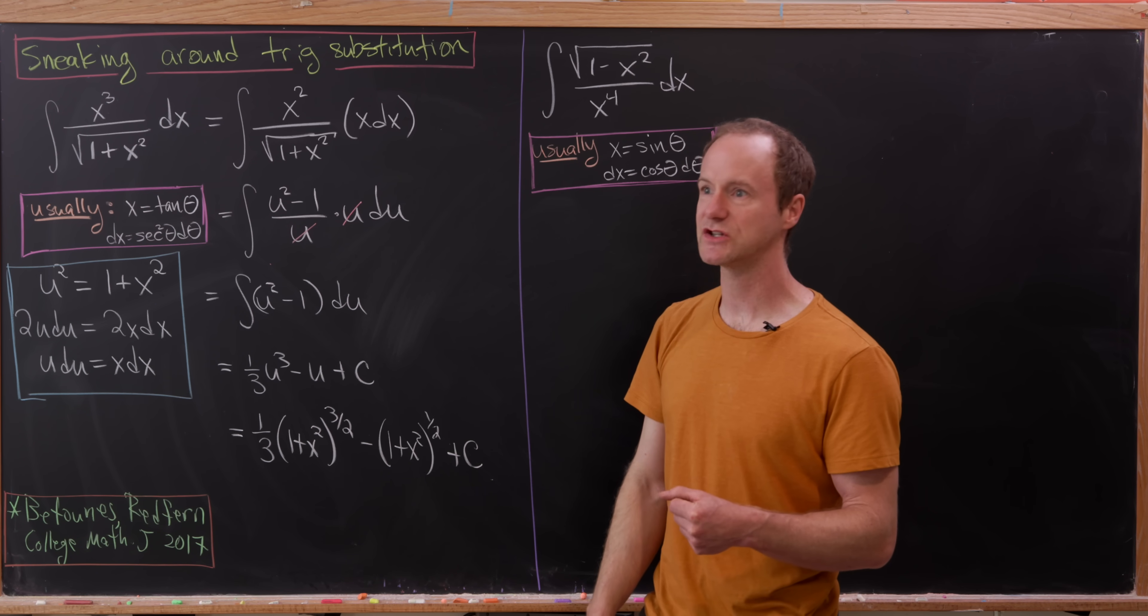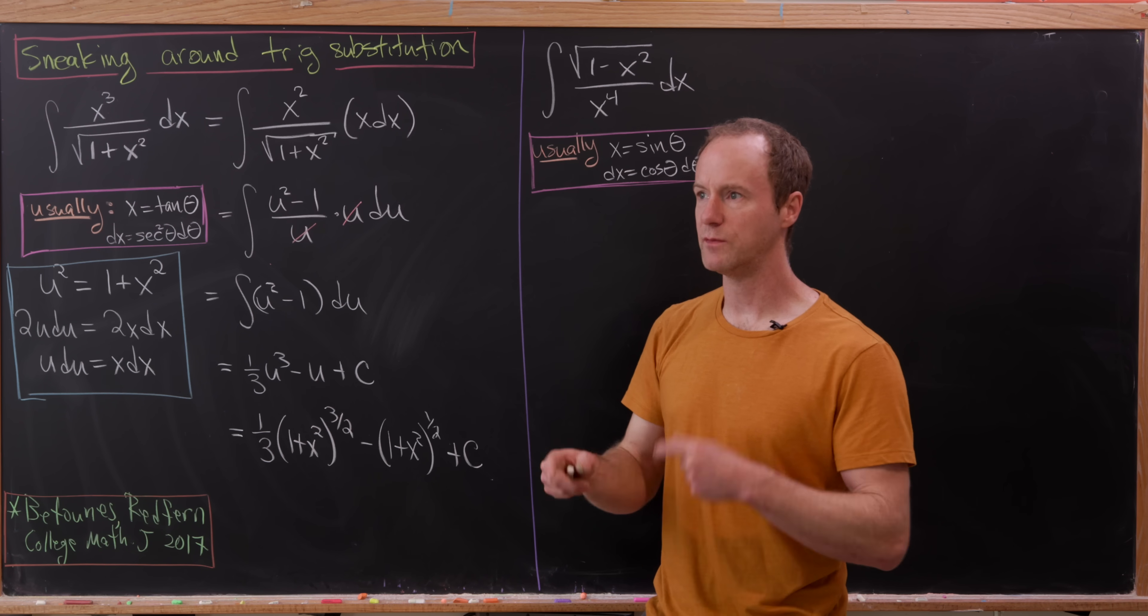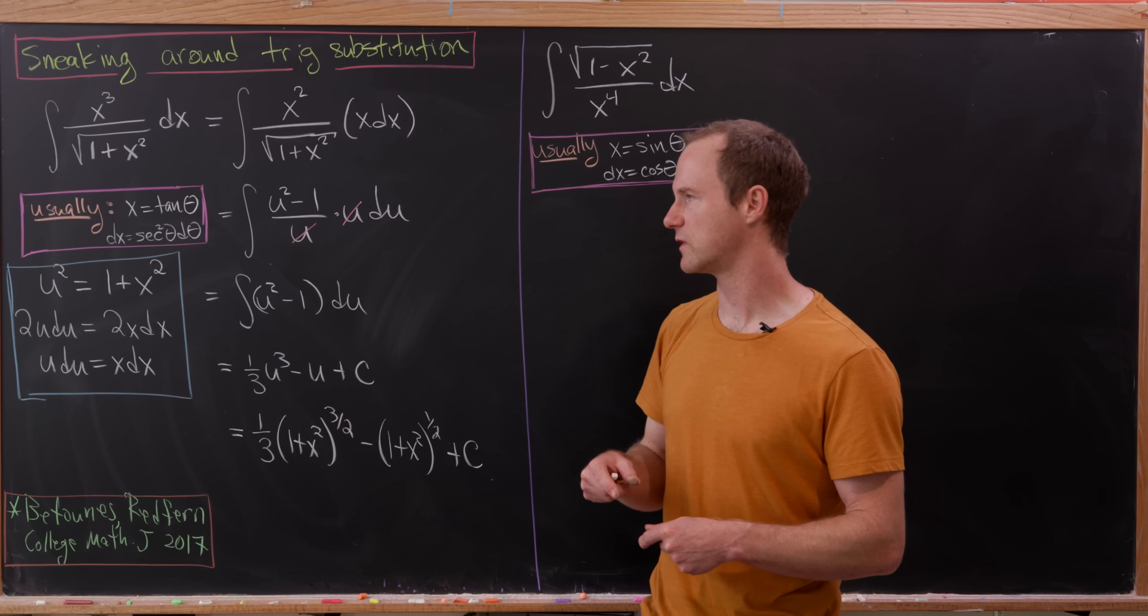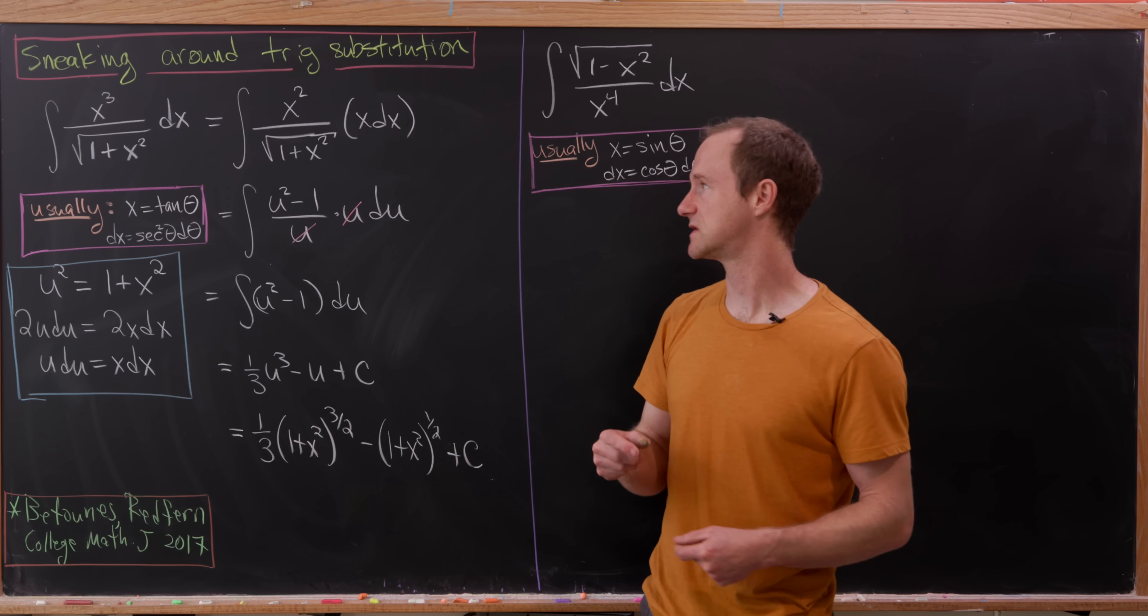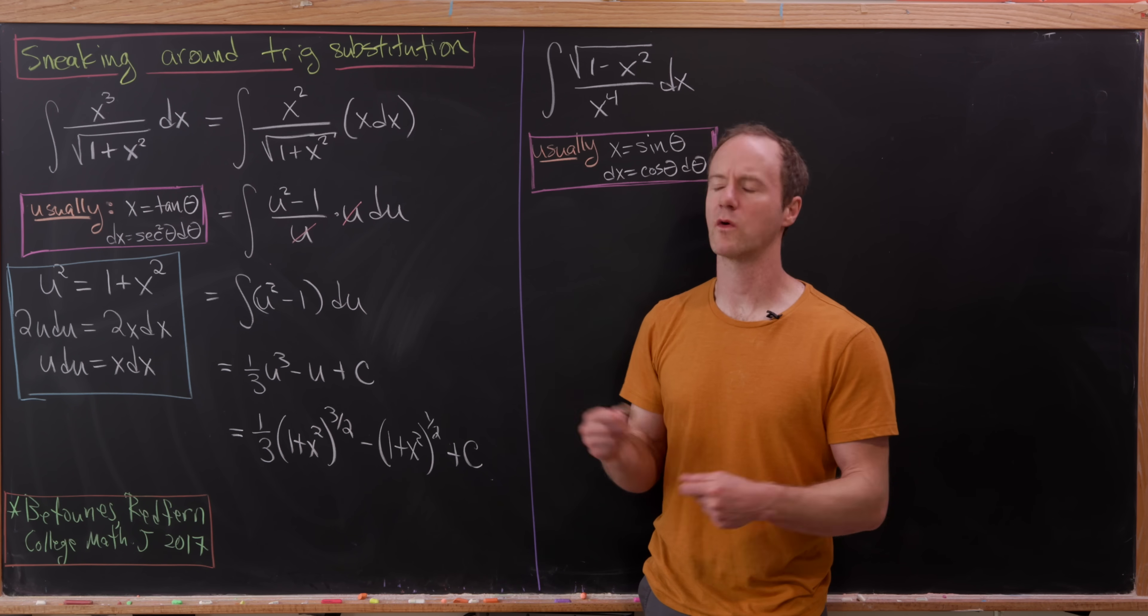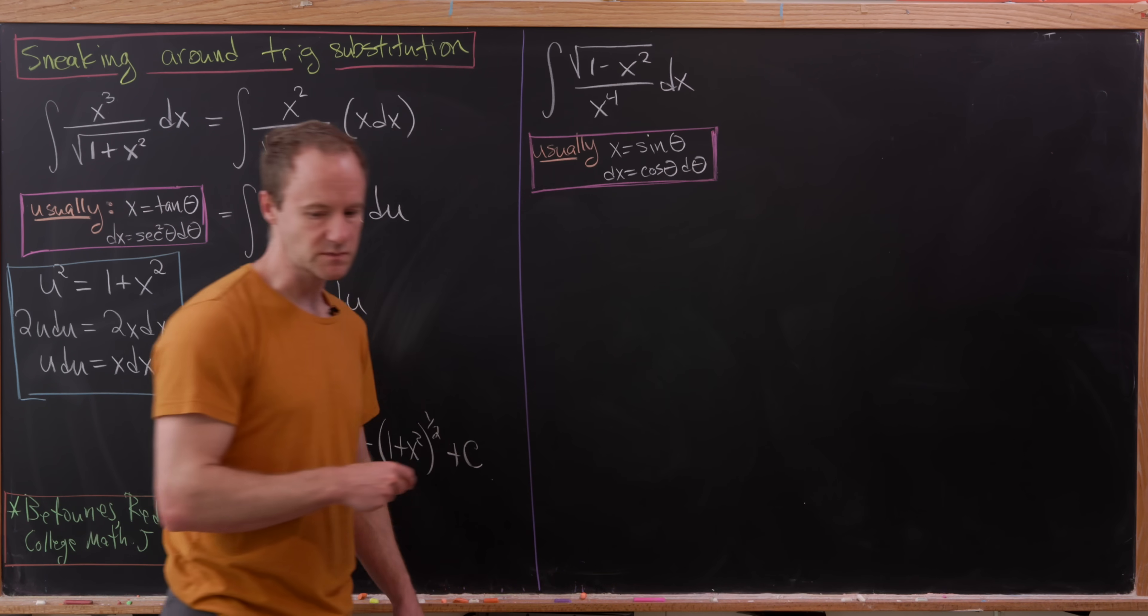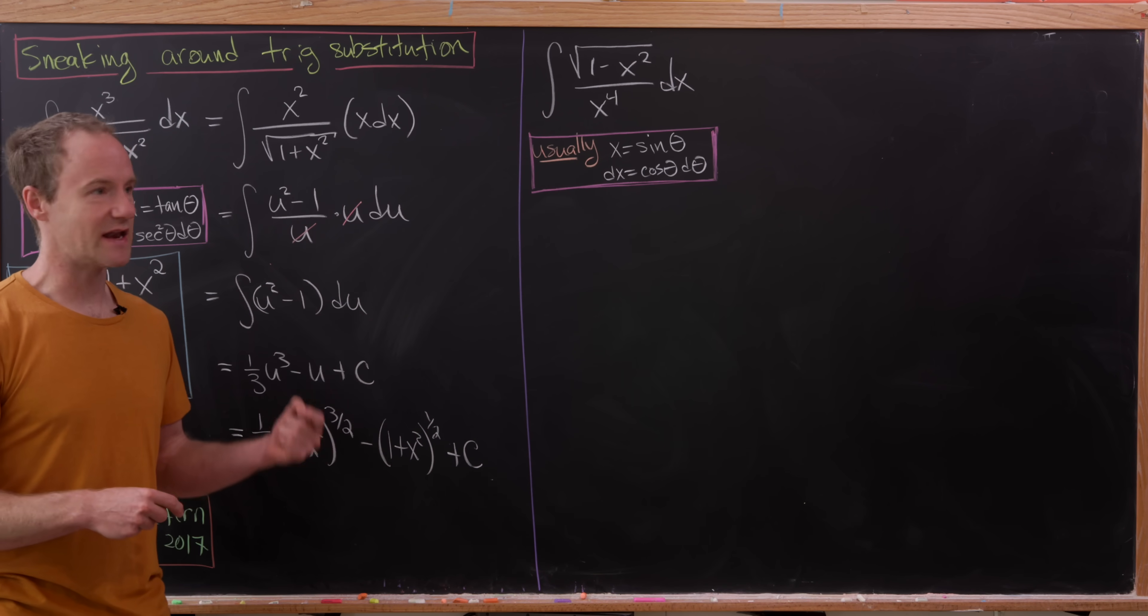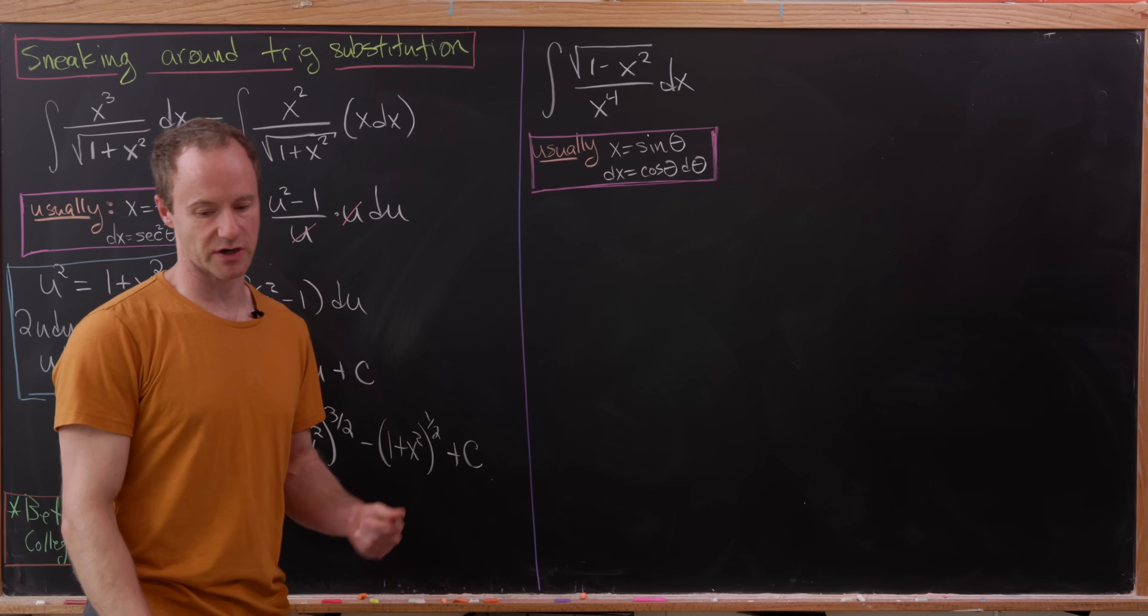Observe that if we had x to an even power and tried to do this, you would be in this endless loop of creating more and more integrals involving these radicals of 1 plus or minus a variable squared or that variable squared plus or minus 1. So that being said, if we've got an even exponent here, we need a new trick.